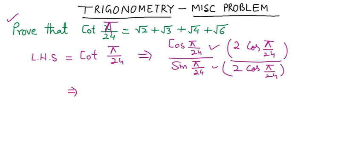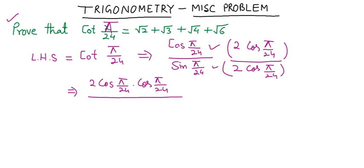When we arrange, the numerator becomes 2cos(π/24)·cos(π/24), and in the denominator we have 2sin(π/24)·cos(π/24).